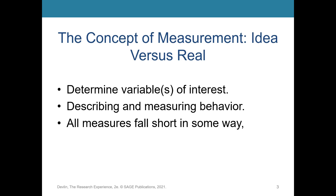I would tell every person interested in research: the first thing you have to do is determine the variable or variables of interest. If you're looking at anxiety, you need an instrument that measures anxiety. If you're looking at perceived control, you need an instrument that measures perceived control. If you're studying the relationship between anxiety and perceived control, you'll need two instruments — one measuring each. Remember, your whole goal with these surveys is to describe and measure behavior.